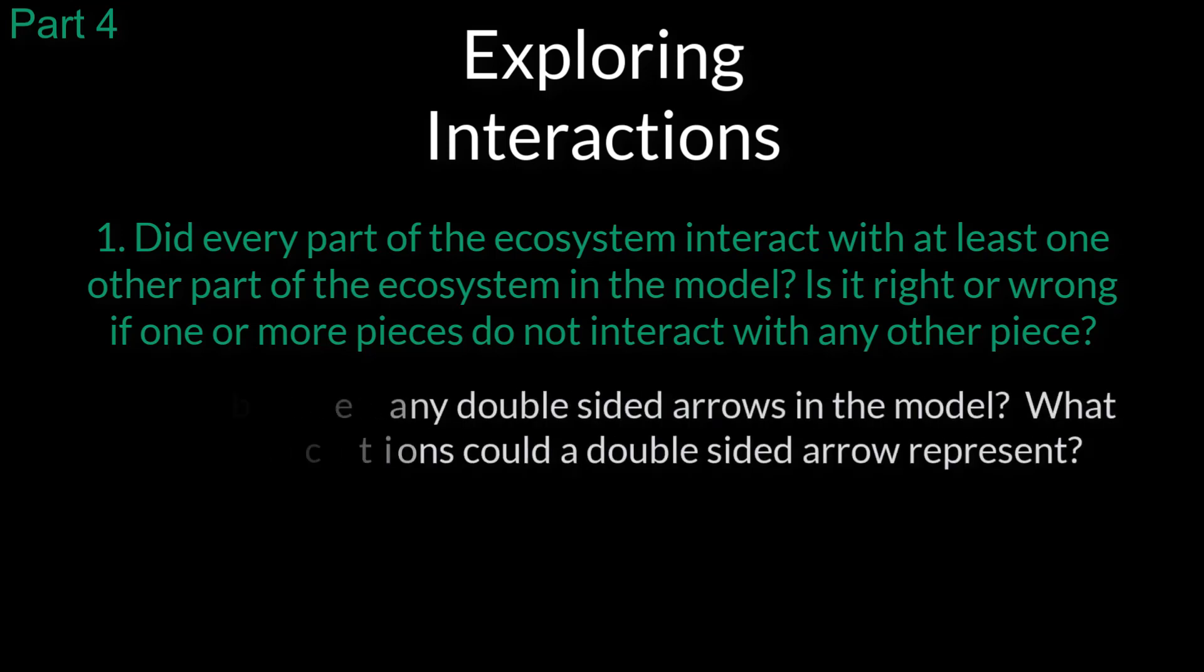Question two: Should there be any double-sided arrows in the model? What types of interactions could a double-sided arrow represent?